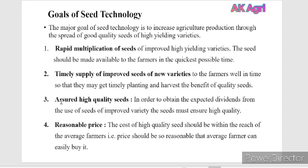The third goal is assured high quality seeds. In order to obtain expected dividends or profits from the use of seeds of improved variety, the seed must be ensured to be of high quality. The fourth goal is reasonable price — the cost of high quality seed should be within the reach of the average farmer, meaning the price should be so reasonable that even a normal farmer can easily purchase good quality seed. These are the goals of seed technology.